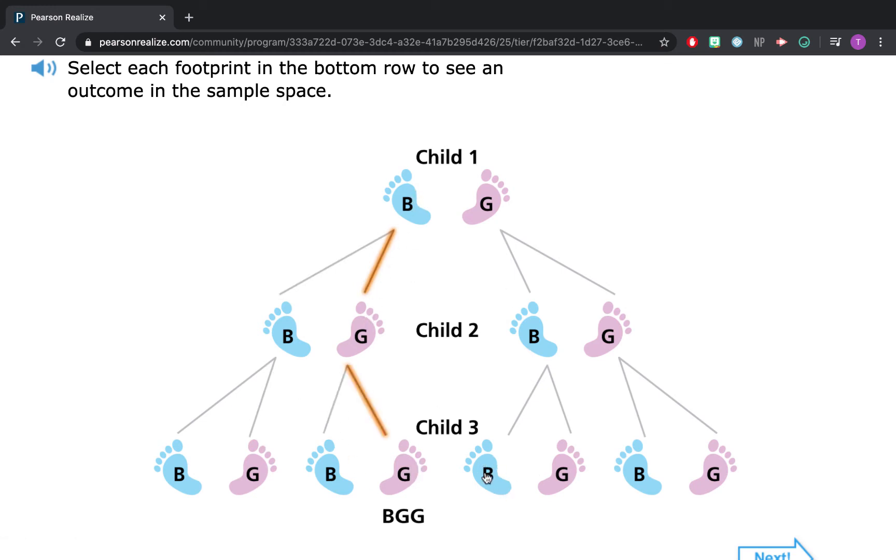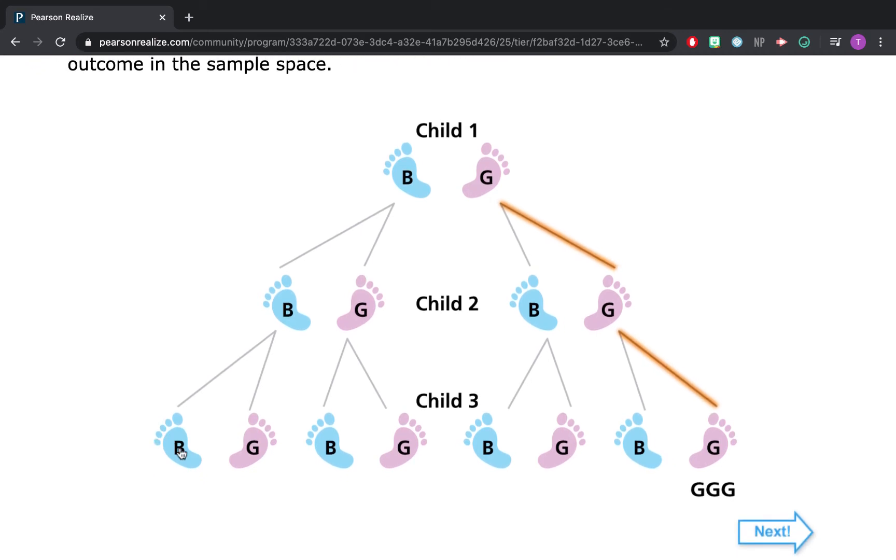This represents boy, boy, girl. It's like you're following a pathway. This would be boy, girl, boy. Boy, girl, girl. Think about what this one here will be. That one's girl, boy, boy. Hopefully you're getting the idea. So the total possible number of outcomes are one, two, three, four, five, six, seven, eight possible outcomes.